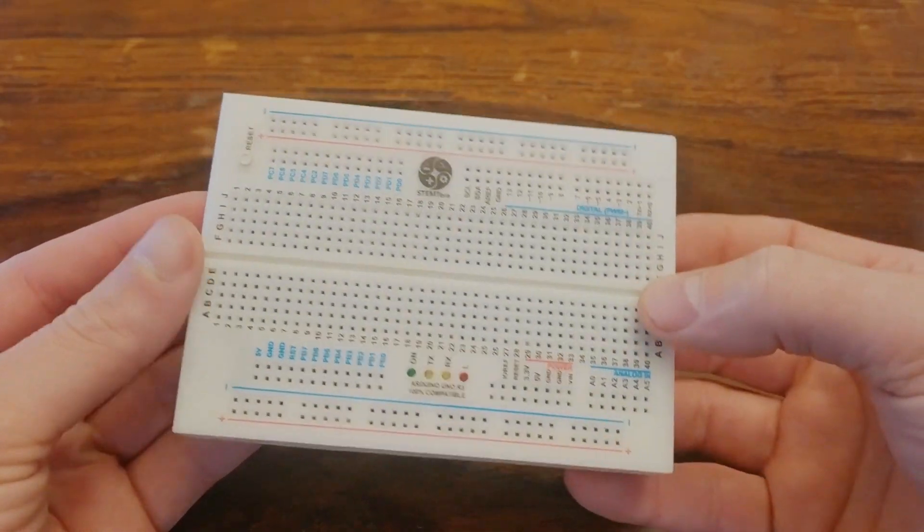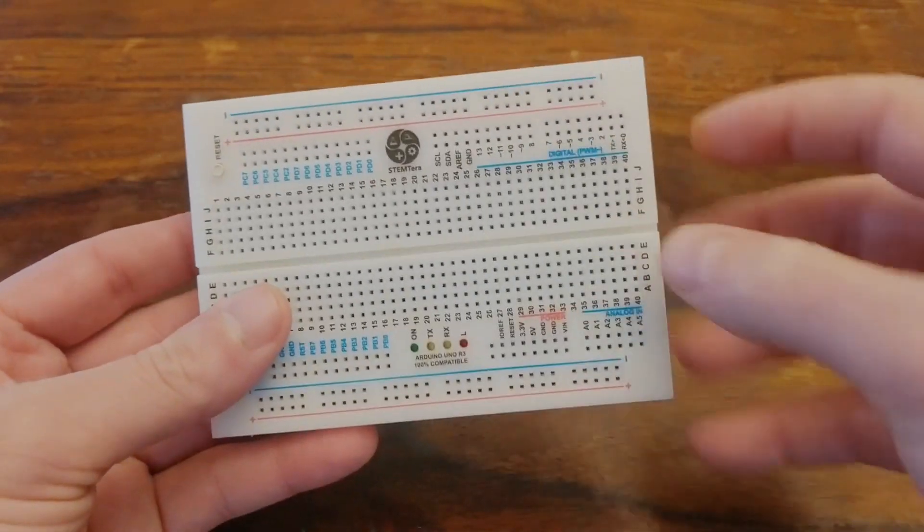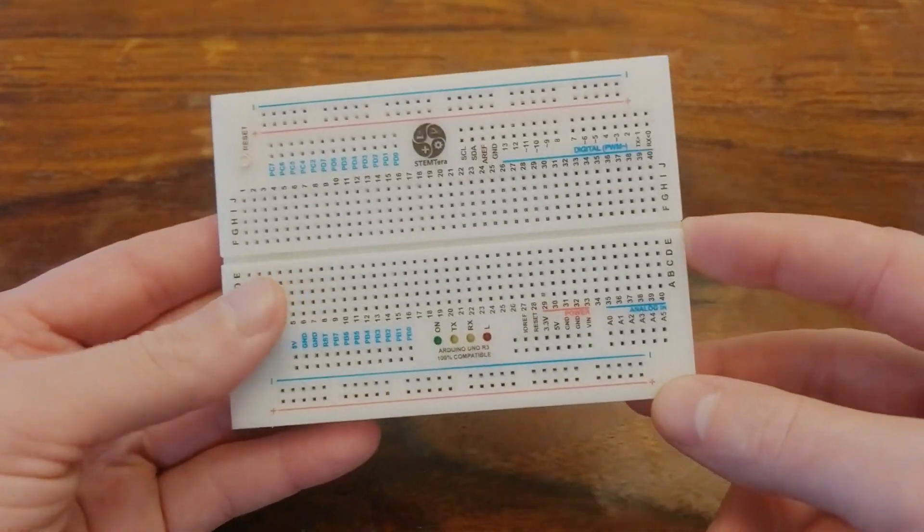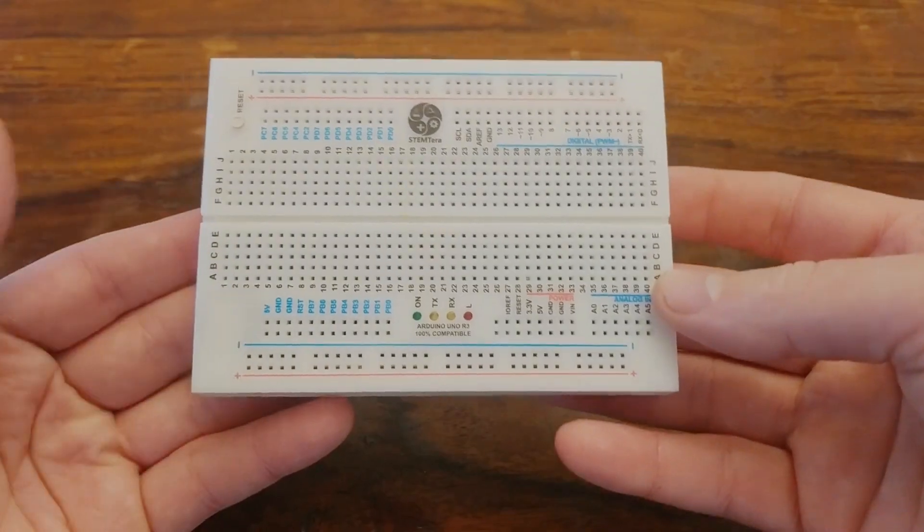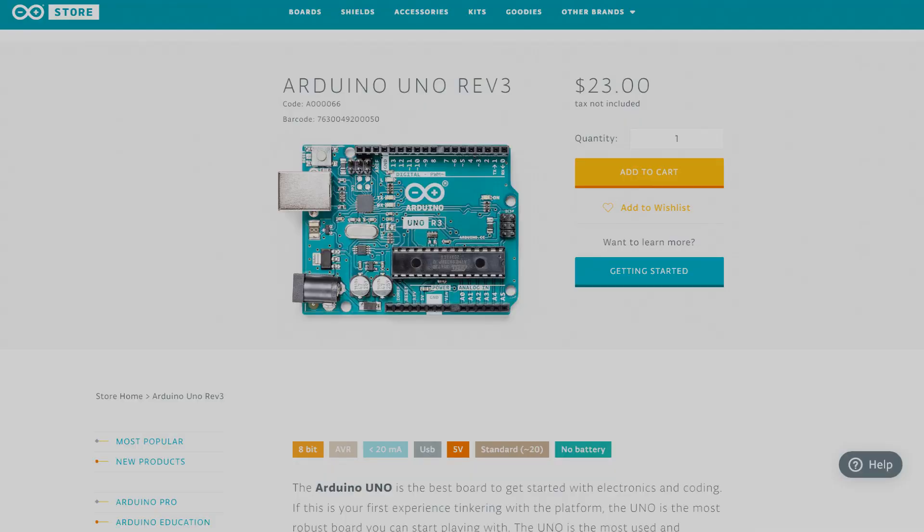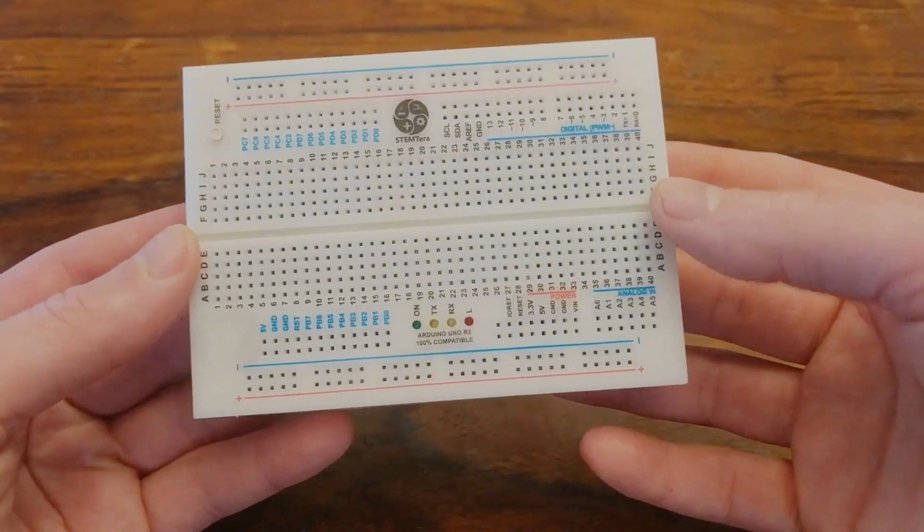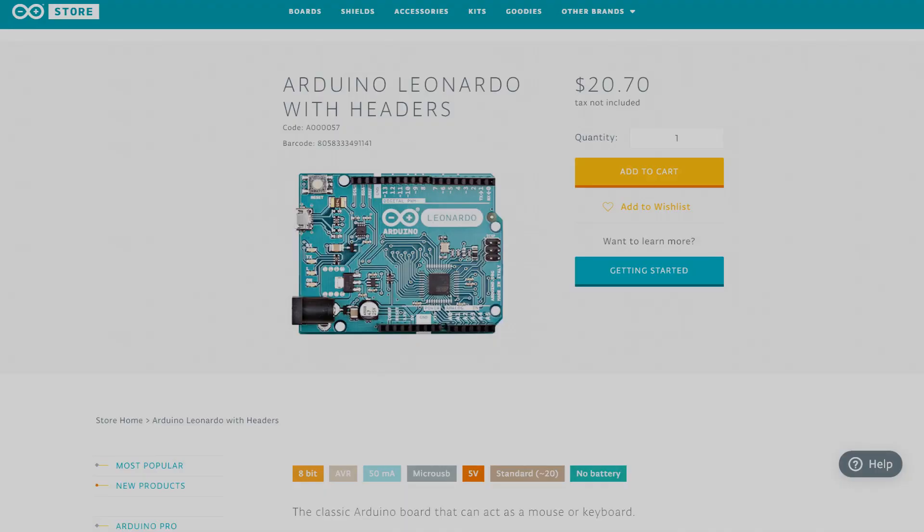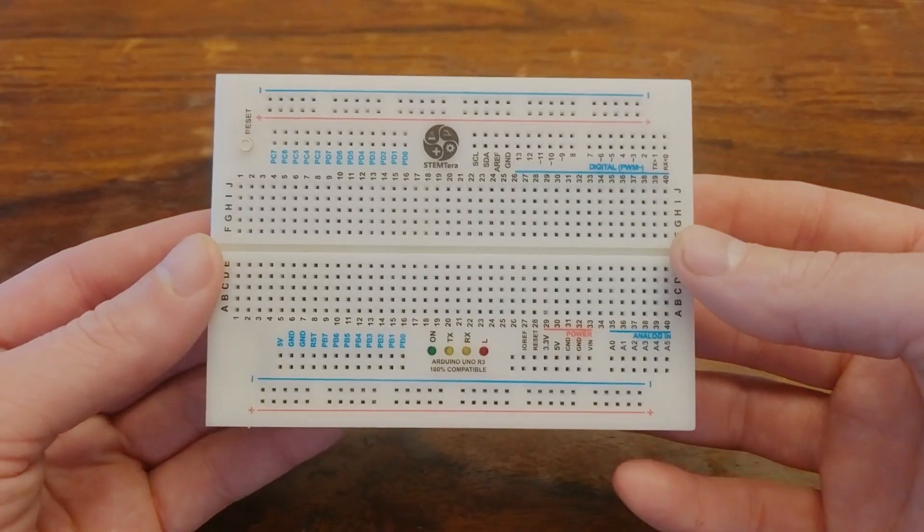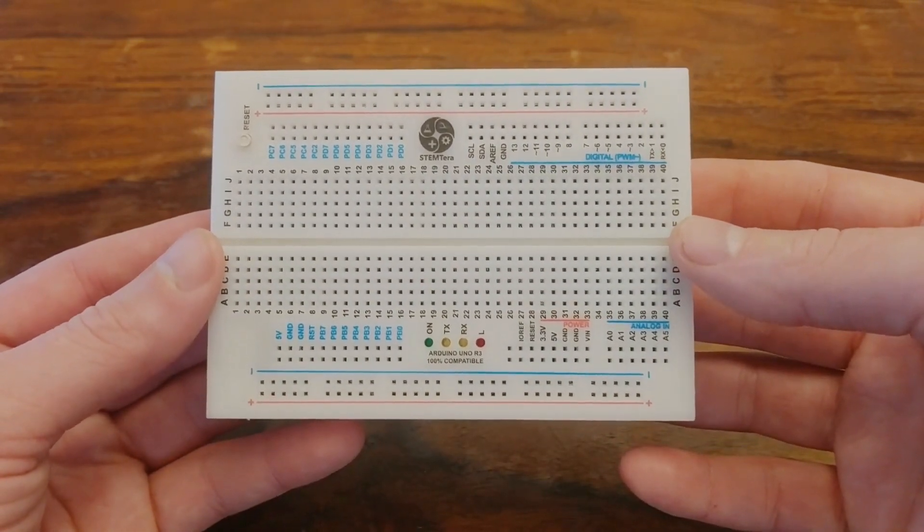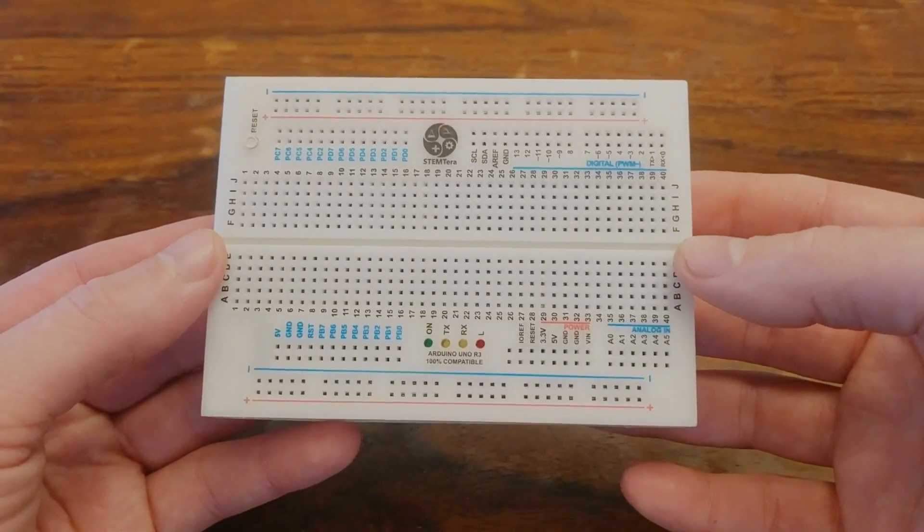Now, I did mention that there are two microcontrollers in this thing. The main one that you load your Arduino code onto is an ATmega328P, which is the same one used in the Arduino Uno boards. But there's also an ATmega32U2, which is similar to the microcontroller used in the Arduino Leonardo. So what's cool about those is that they actually have a built-in USB controller.